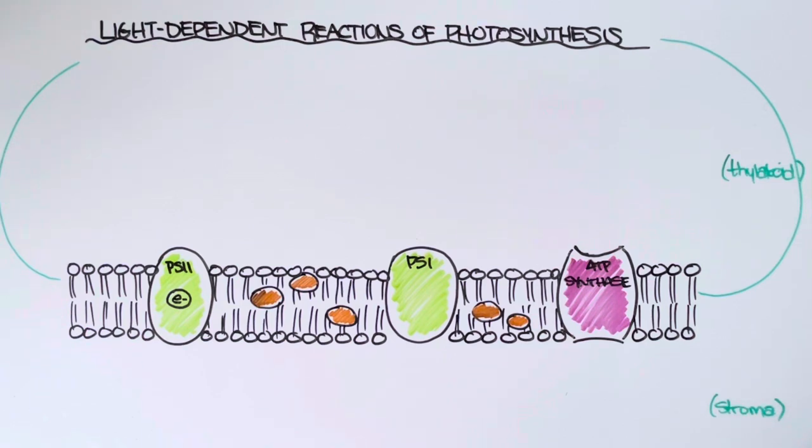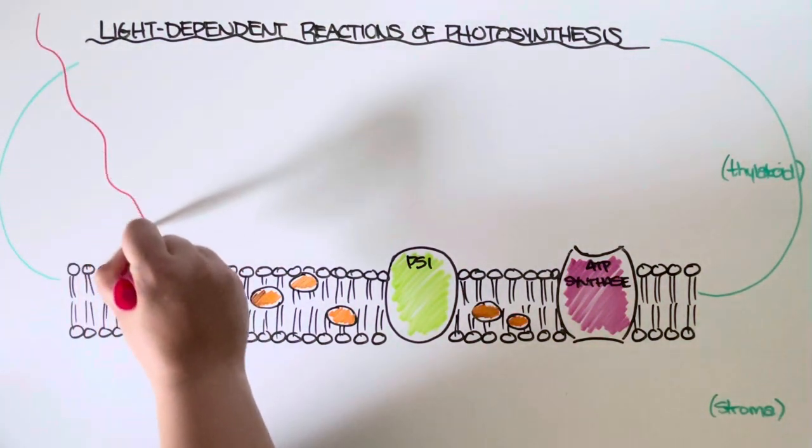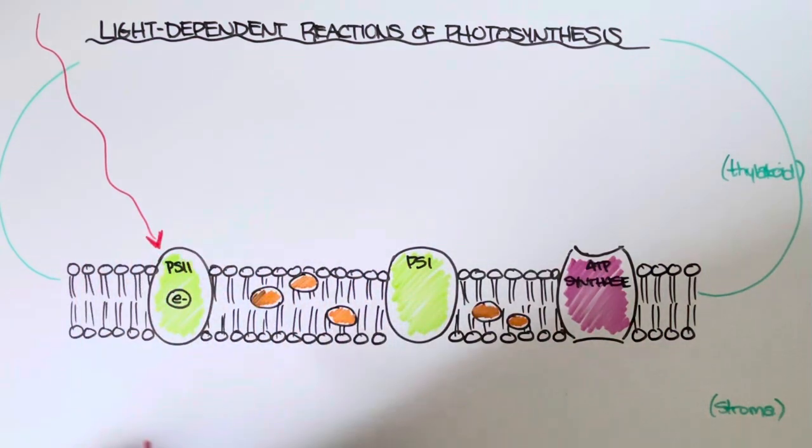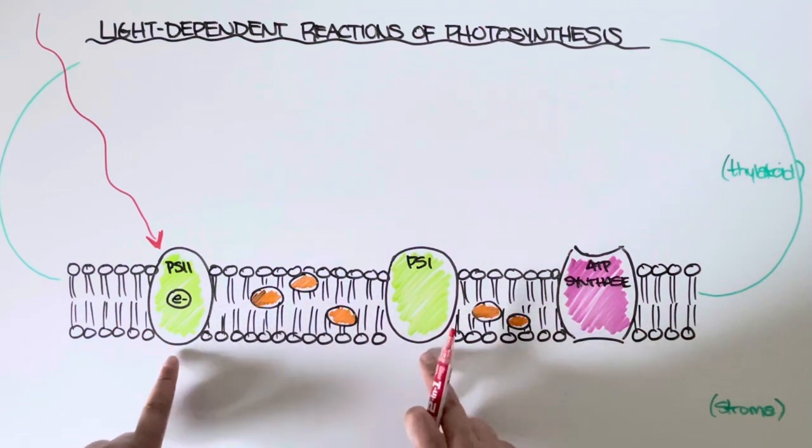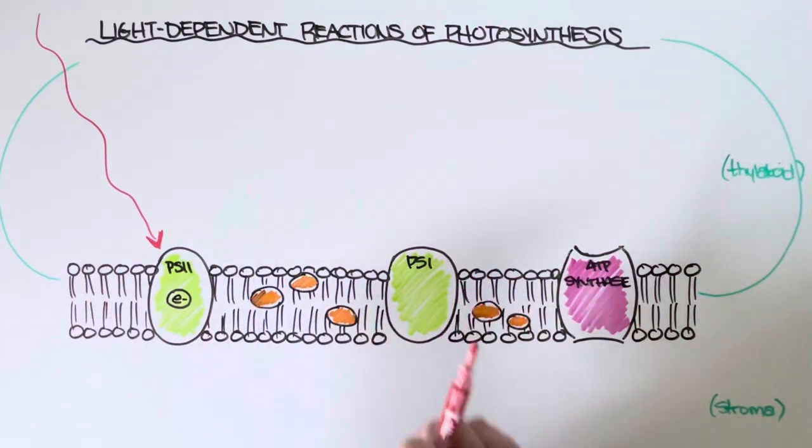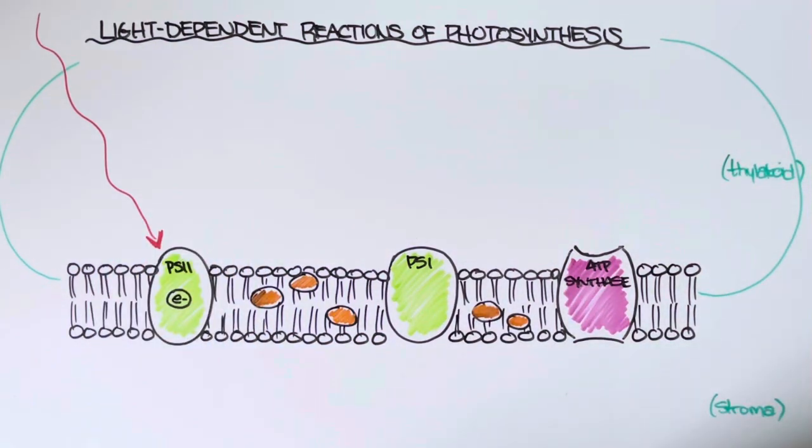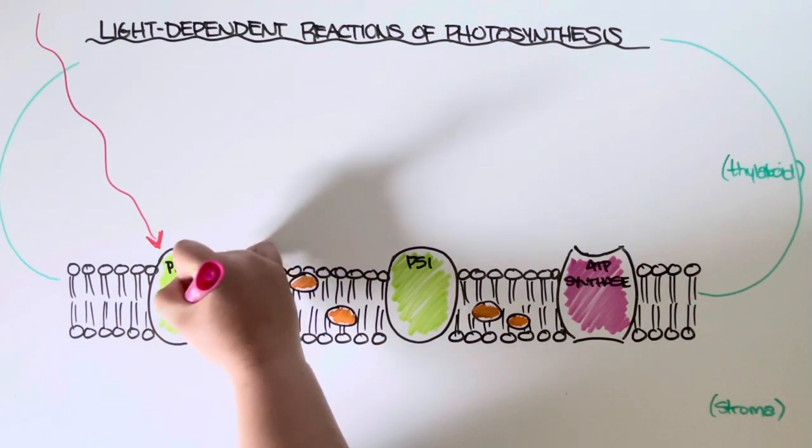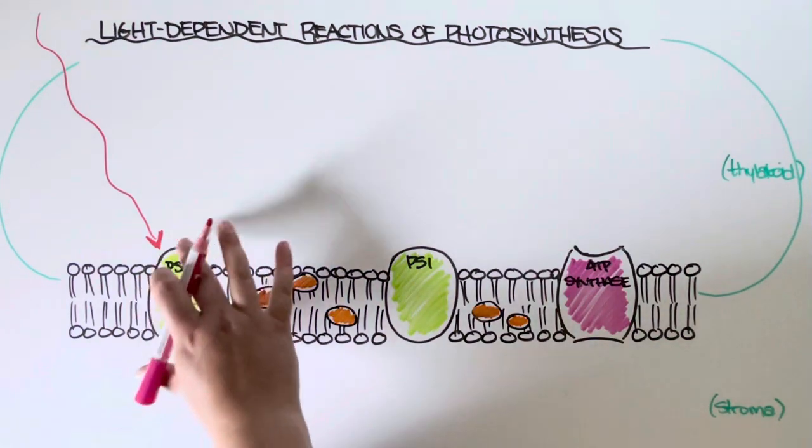So the whole thing begins with sunlight. The sun comes along and strikes chlorophyll molecules found in these proteins here, photosystem 2 and photosystem 1. Now these are just two versions of essentially the same membrane-bound protein but they're both packed full of chlorophyll. And so chlorophyll, since it's so good at absorbing the sun's energy, it transfers that radiant energy to an electron found in the reaction center of photosystem 2, our first protein.